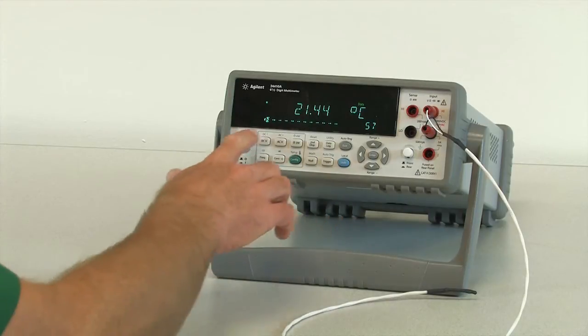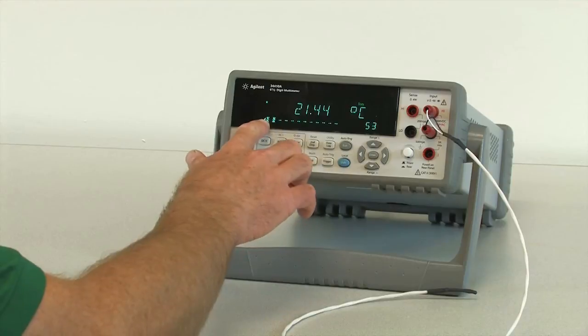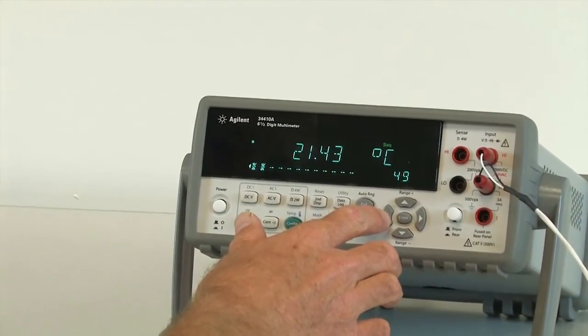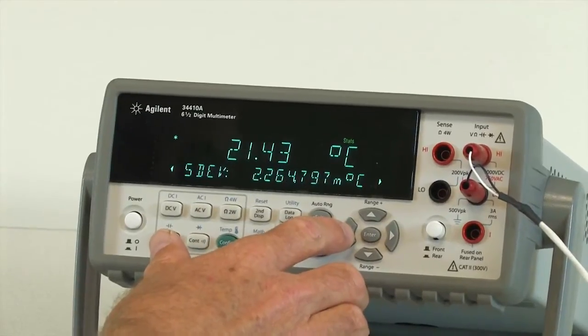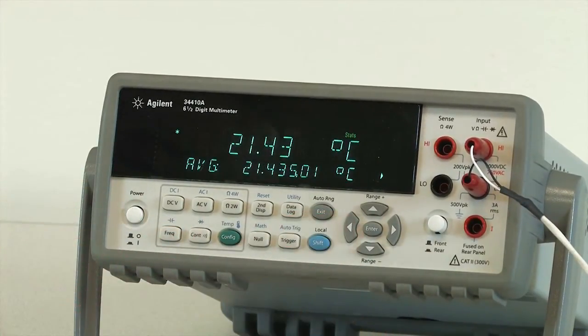So you can see the DMM, as it starts to complete, it counts down the number of readings left, and it has an indicator showing the progress. In addition, you can also go back to the math that we had enabled earlier, which is nice. You can get some idea of the readings as they're taking place to make sure that they make sense.